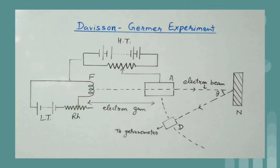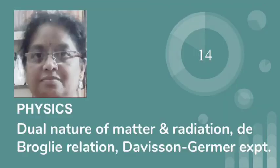From measurement, the wavelength is found to be 0.165 nanometer. The de Broglie wavelength lambda for electron which we found lambda is equal to 1.227 by under root v nanometer with v is equal to 54 volt, lambda comes out equal to 0.167 nanometer which is in agreement with the experimental value.